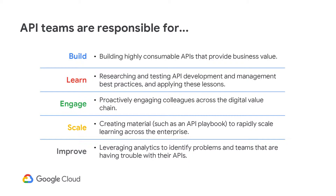In terms of responsibility, the API team owns five core areas. First is building highly consumable APIs. The key word here is consumable. We recommend approaching API design and implementation from the outside in rather than the inside out. What this means is that the API team will always need to keep the end consumer in mind — in the case of our digital value chain, this is the app developer.